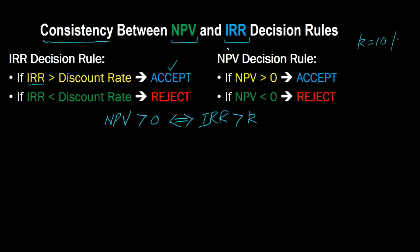Now why is this the case? Suppose you are evaluating a project and you find that the NPV of that project is greater than zero at a discount rate of 10%. What does that mean? It means that even after you have accounted for the fact that by investing in this project you're losing 10% elsewhere — in other words, even after accounting for that opportunity cost — you're still making money on this project, so net present value is greater than zero. How is that possible? That is only possible if you are making more than 10% on this project.